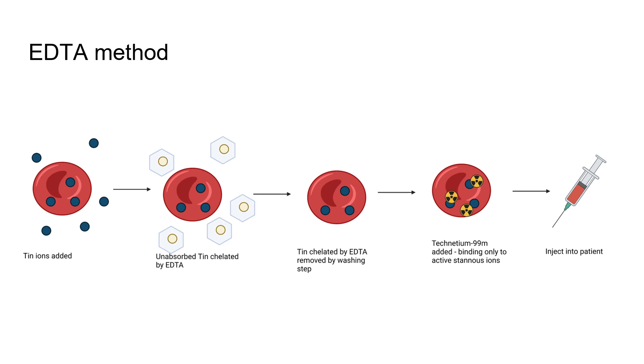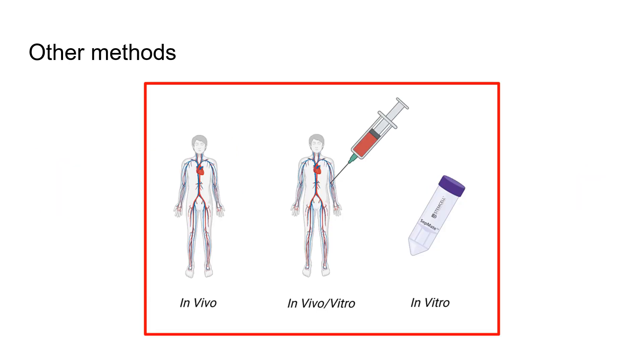There are also other methods where you inject the tin and pyrophosphate into the patient, wait 15 minutes or so and then inject the pertechnetate and you label inside the patient. You get some mixed versions of the two methods and then you get the in vitro methods I discussed.